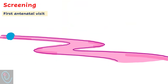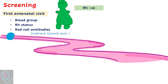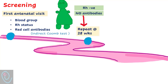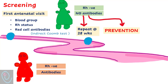During the first antenatal visit, identify the blood group, RH status, and assess red blood cell antibodies by indirect Coombs test. For RH negative women with no antibodies (non-sensitized), repeat testing at 28 weeks and start steps of prevention of sensitization. For RH negative women with antibodies (sensitized), start management steps to identify and manage fetal hemolytic disease.